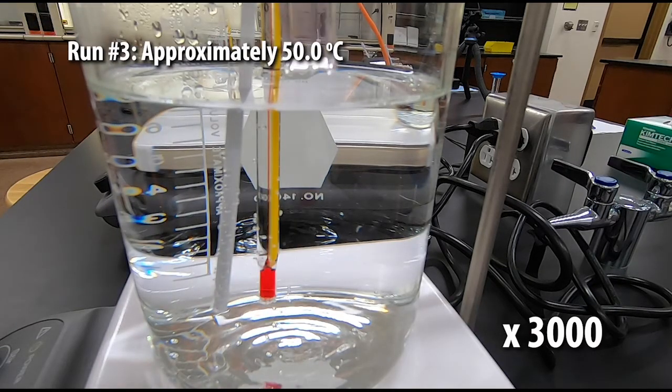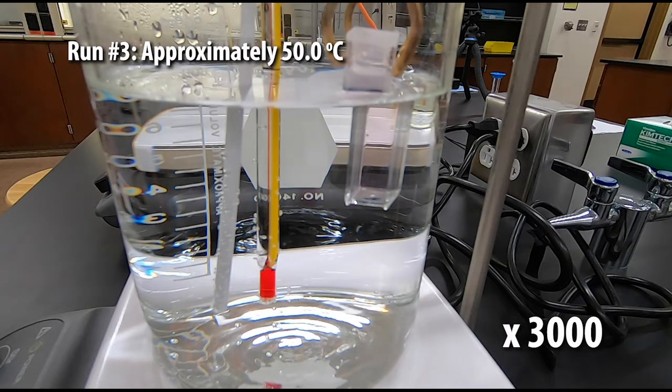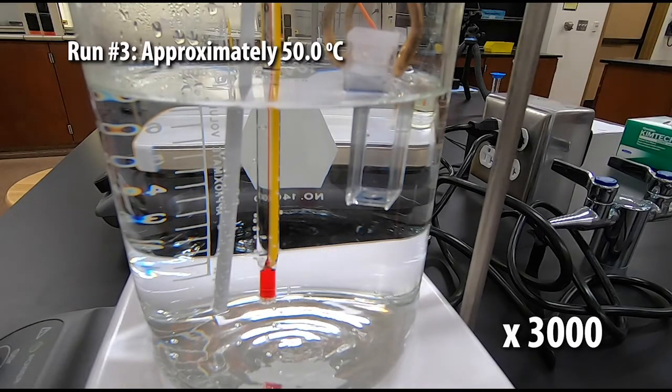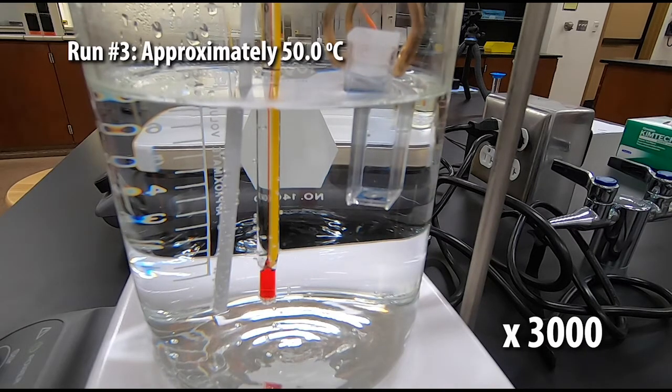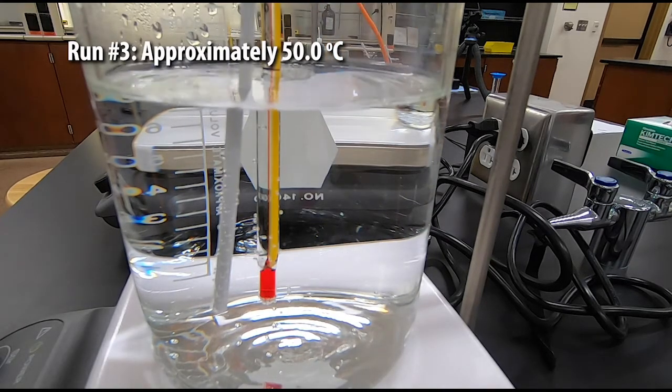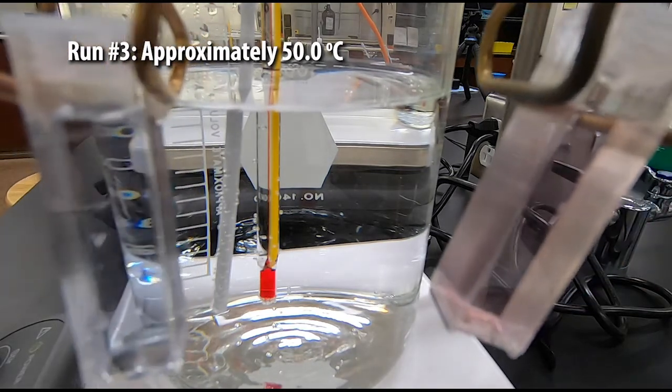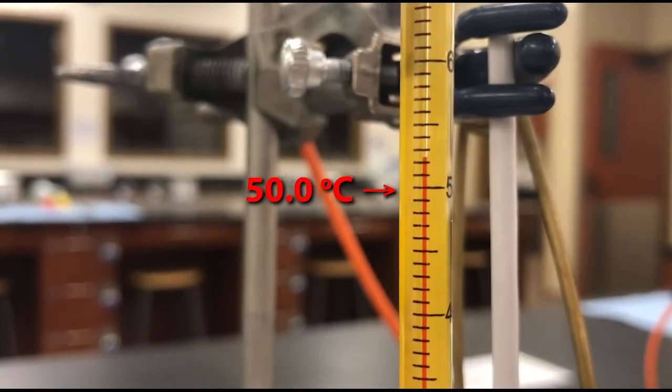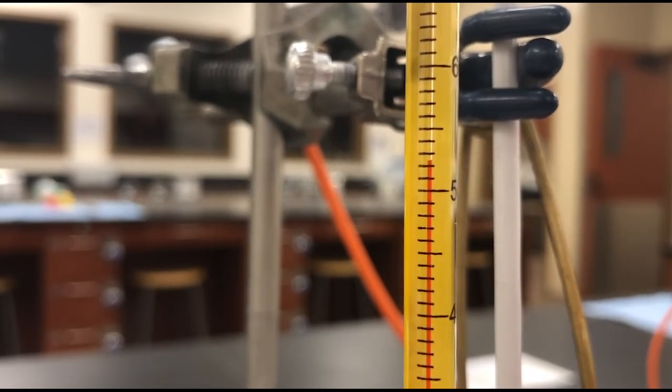Here we have our second water bath. This water bath has a temperature of approximately 50 degrees Celsius. You can see that there's an even greater shift to the blue compared to the first sample. Here's our thermometer. The long line is 50 degrees Celsius. Write down what the actual temperature is in your lab notebook.